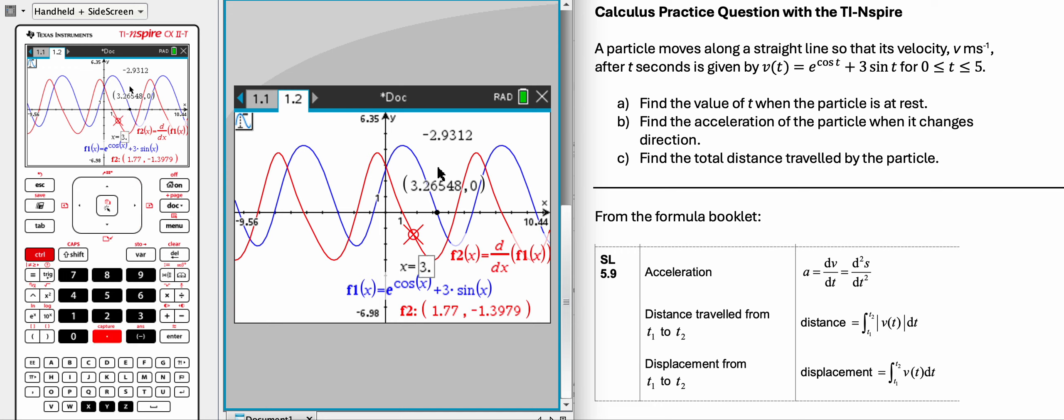It's letting x equal 3.26548, and you can see it's giving us negative 2.9312, which is right down here.